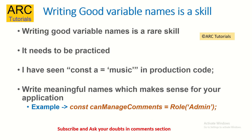Writing good variable names is a skill — it has to be a meaningful name. I've seen random names like `const a = music` in production code, which is really bad; nobody knows what `a` is. When you make a name, try to give it meaning so that whoever reads it understands what's happening. For example, `canManageComment` is a much better name than `const a`. It conveys whether the user can manage comments or not. Writing meaningful names also helps you finalize the logic or algorithm as you code.